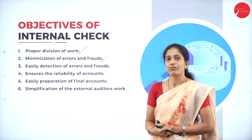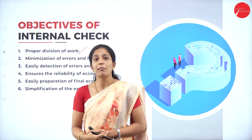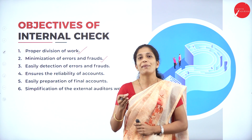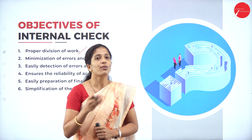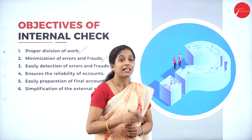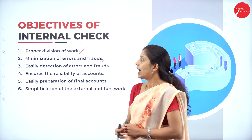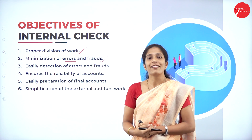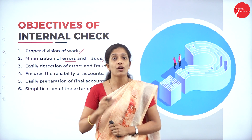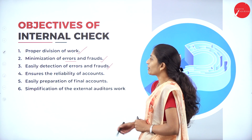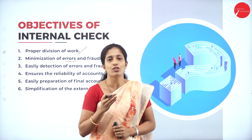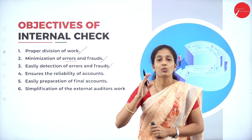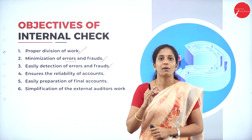Next is minimization of errors and frauds. The main intention of internal check is to minimize errors as well as frauds. As human beings, accountants may make mistakes during the accounting process. Such mistakes can be identified by the employees inside the organization, helping in reduction of errors and frauds. Errors are unintentional mistakes, while frauds are intentional mistakes. Next is easy detection of errors and frauds — when books of accounts are checked on a regular basis, small mistakes can be recognized easily and that person held responsible.